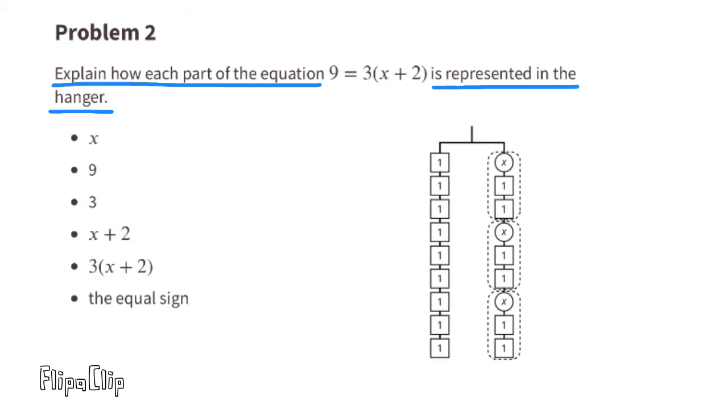Problem number two: Explain how each part of the equation 9 = 3(x + 2) is represented in the hanger. On the right-hand side of the hanger, there are three groups of x + 1 + 1, which is the same as x + 2. 9 is represented on the left-hand side of the hanger, where you have nine groups of 1.